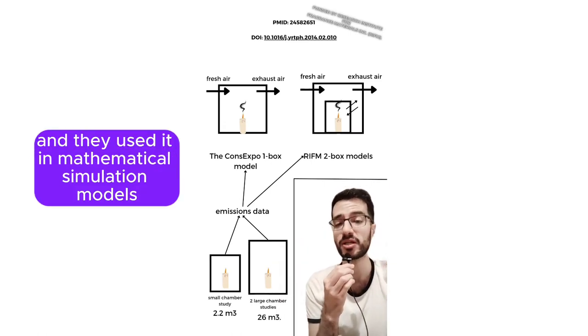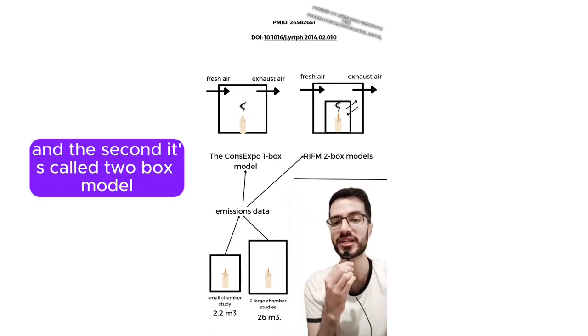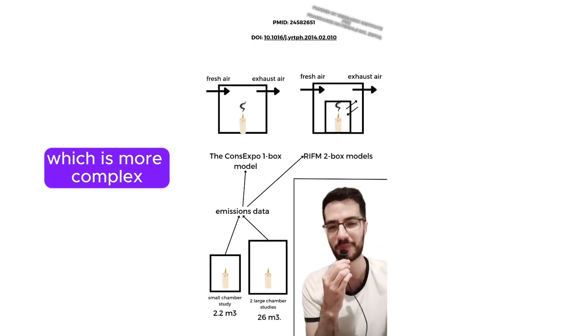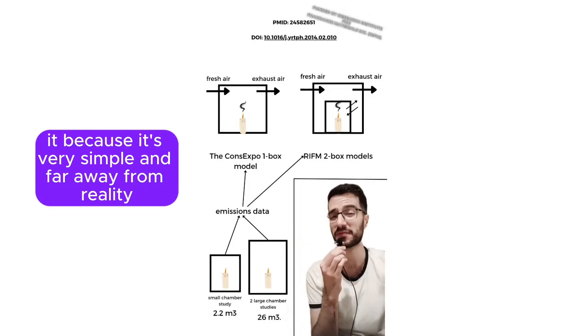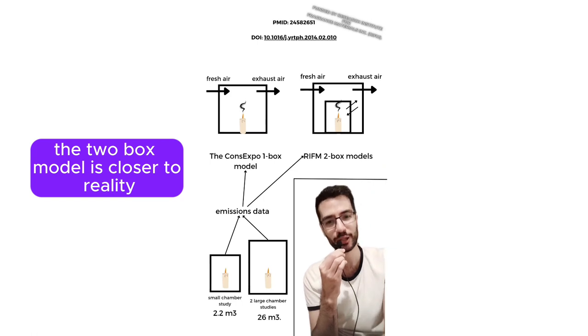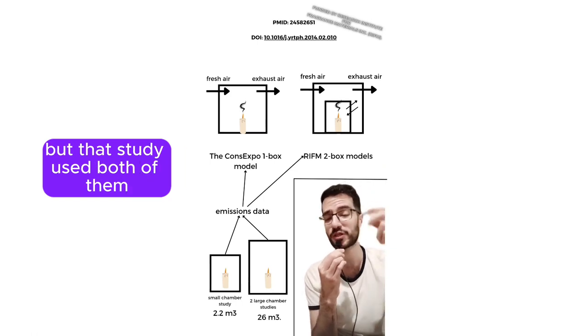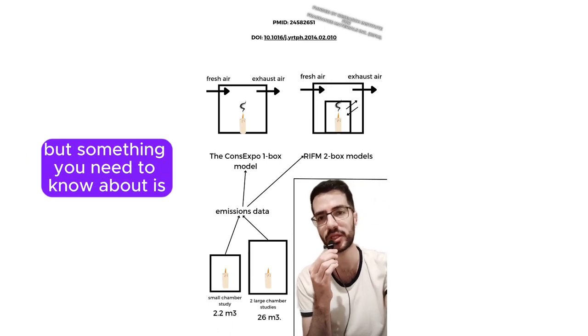One is called the one-box model, which is more simple, and the second is called the two-box model, which is more complex. I'm mentioning this because the one-box model, because it's very simple and far away from reality, gives an exaggerated result. The two-box model is closer to reality, but that study used both of them. The quality of the study was good, but something you need to know is the funding was done by the RIFM.